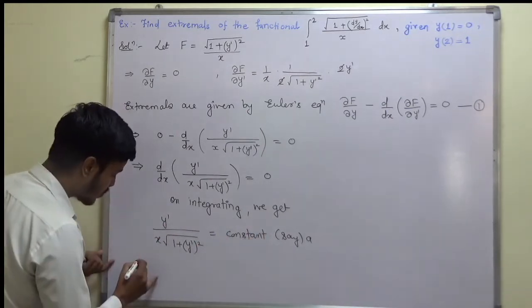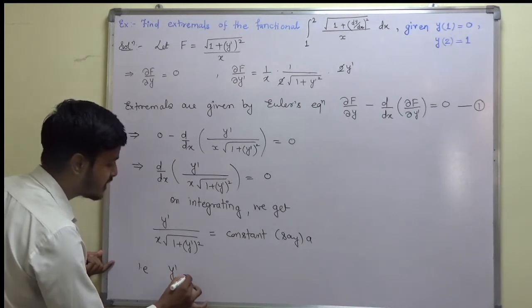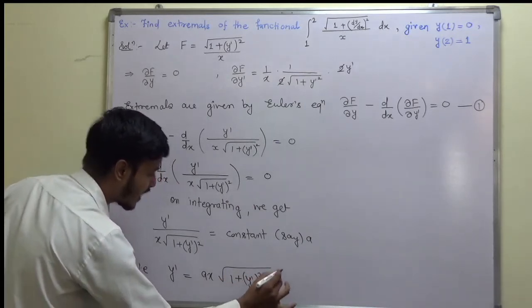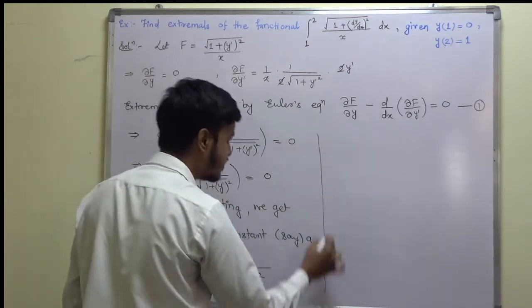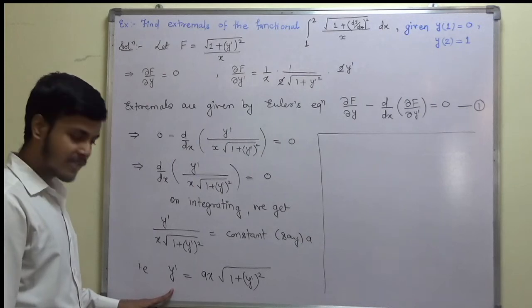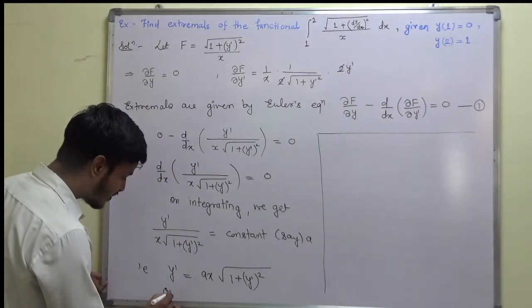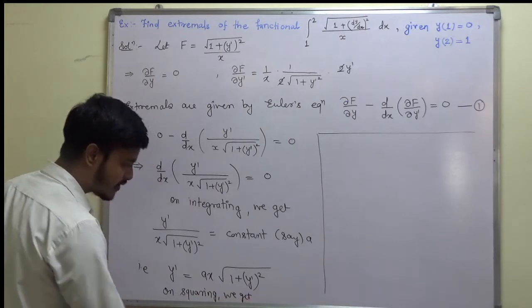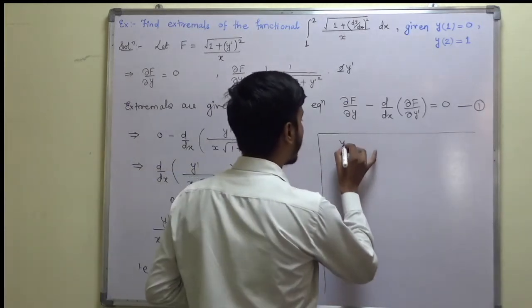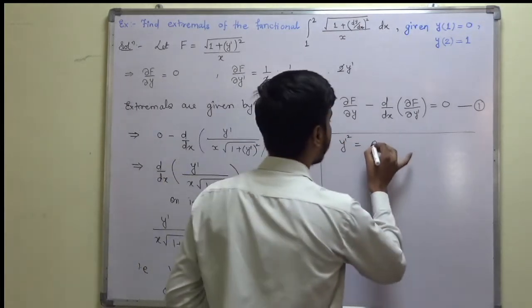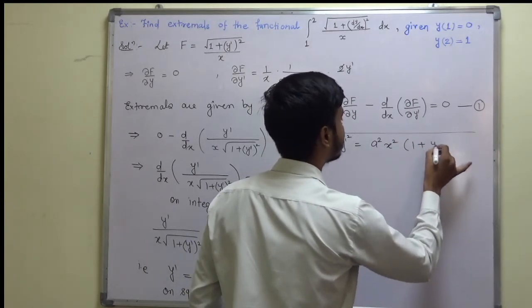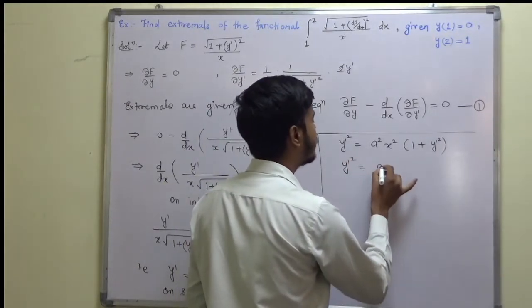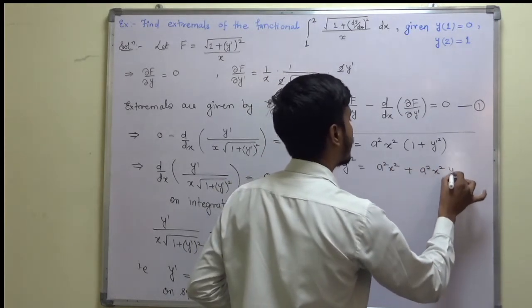Rearranging gives y′ = a · x · √(1 + y′²). Squaring both sides: y′² = a²x²(1 + y′²) = a²x² + a²x²y′².